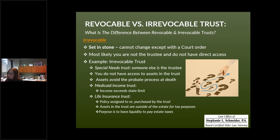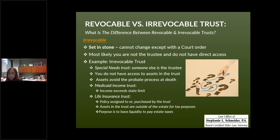There is another type of special needs trust where a parent or parents may have a child who was born with a developmental disability, or was born healthy but later had an accident or contracted an illness. They want to provide an inheritance for this child without interfering with government benefits, and they know their child doesn't have the wherewithal to manage the inheritance. In that situation, we can write a revocable trust for the parents, and underneath that document we write a special needs trust for this particular child. The main trust is revocable, but the special needs trust underneath it will become irrevocable.